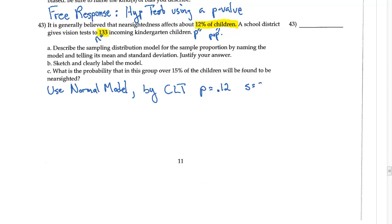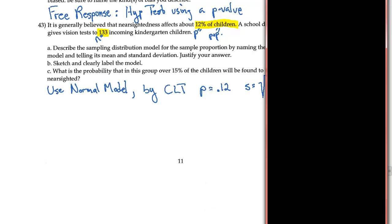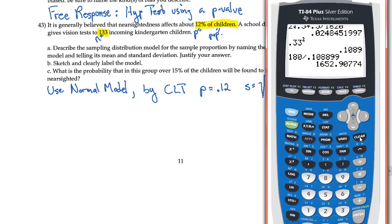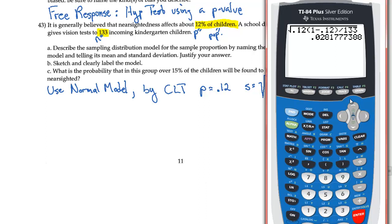Then for my standard deviation, what I need to do is take the square root of the 12, my p, times 1 minus 12, 1 minus p, all over 133, my n. And I need a value for that, so I'm going to pull up my calculator and take the square root of 12 times 1 minus 12 divided by 133, and I get a standard deviation of 0.028.